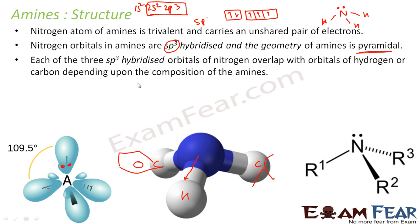So this is the structure actually. This is a pyramidal. Please know it is not tetrahedral. Why? Because this part is all blank. This is a lone pair of electrons here. This is pyramidal.